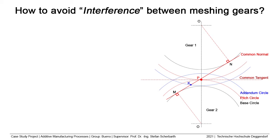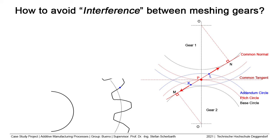Another line drawn tangent to the two base circles is called the common normal, and the angle between the common tangent and common normal is the pressure angle. The point of intersection between the addendum circle of gear one and the common normal is the point of engagement. On the other side, the intersection of the addendum circle of gear two and the common normal is the point of recess. If the addendum circle size increases, the points shift outward towards the involute endpoints on the base circle, and if it increases further, the desired area will disengage and that will cause interference.